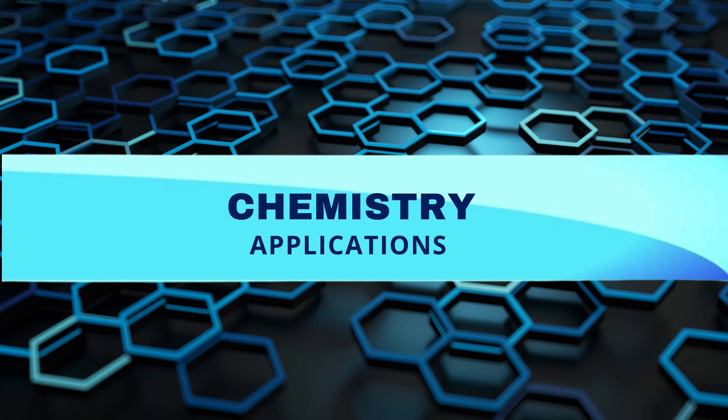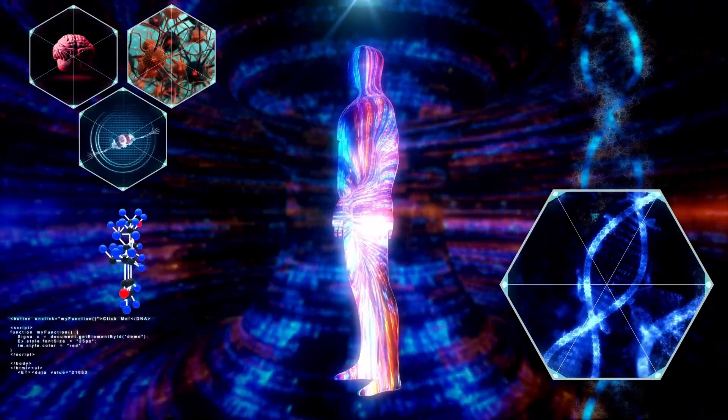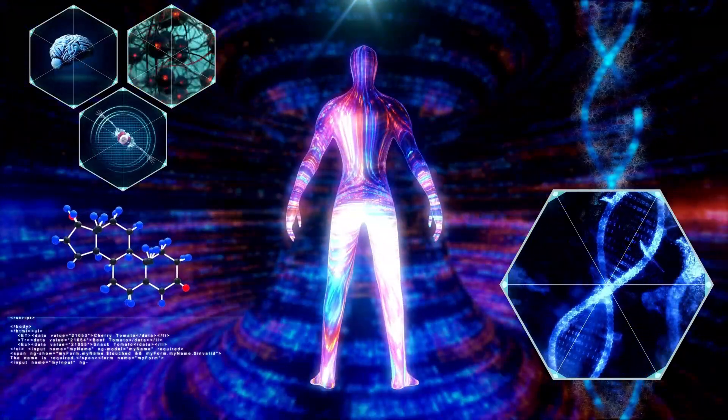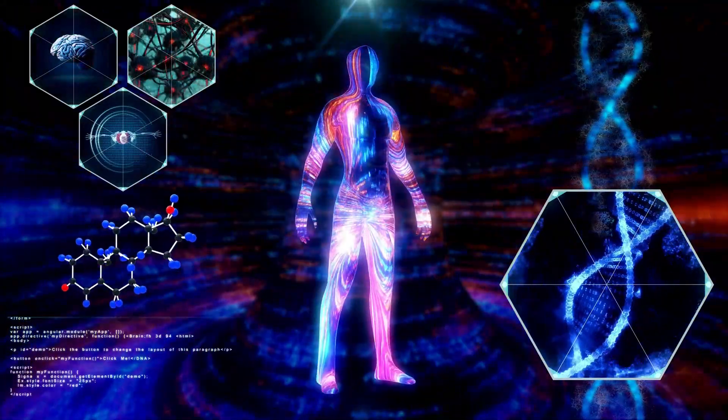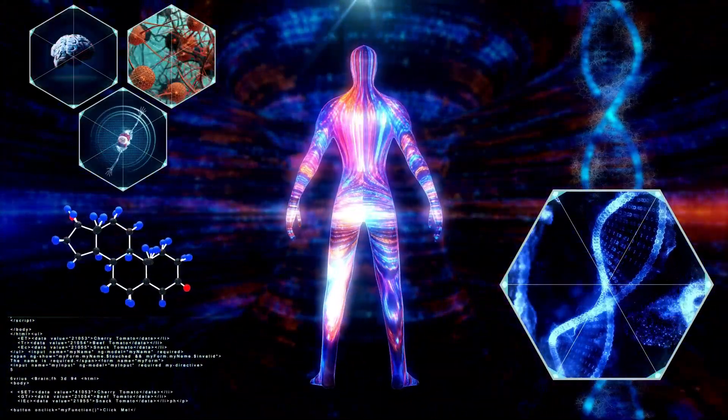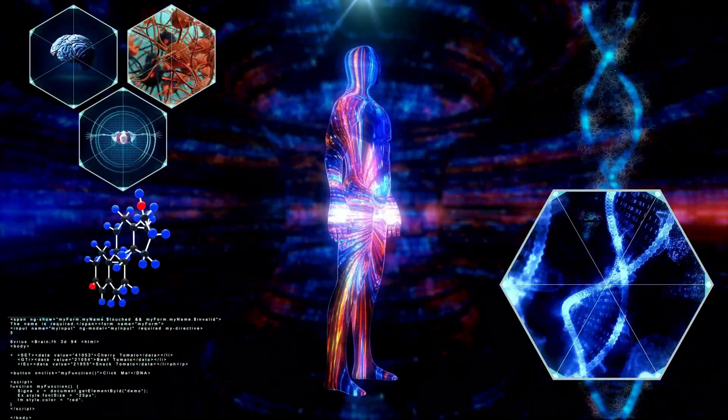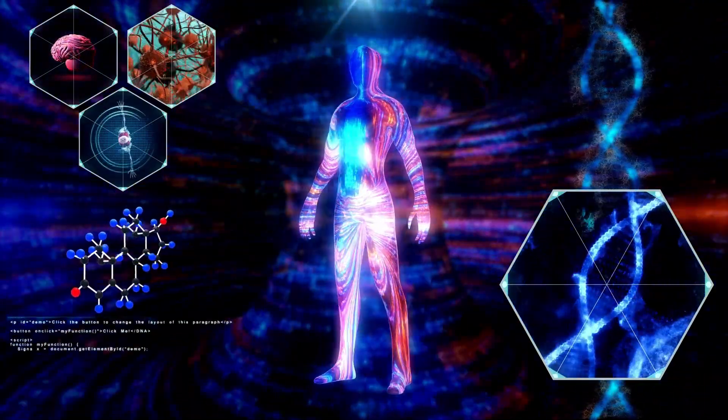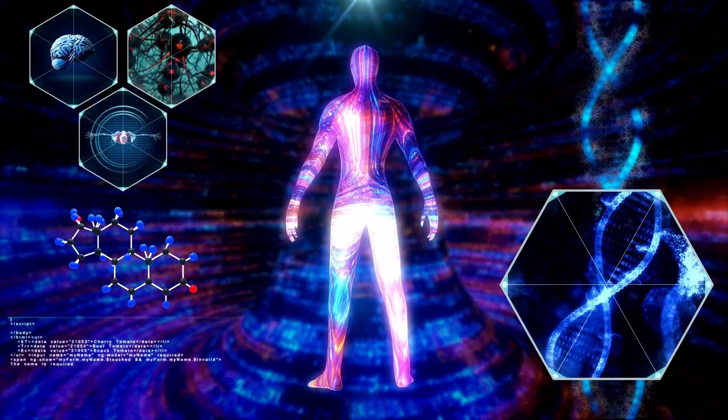Now let's talk about the applications of chemistry. The very first miracle of chemistry is the human body itself. Roughly 96% of the mass of the human body is made of just four elements: oxygen, carbon, hydrogen, and nitrogen, with a lot of that in the form of water.